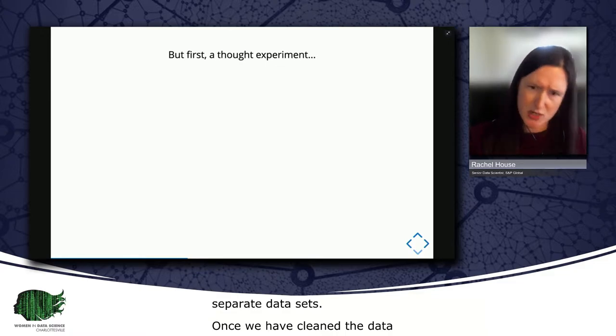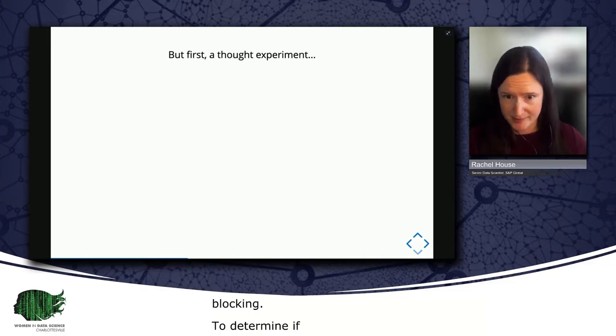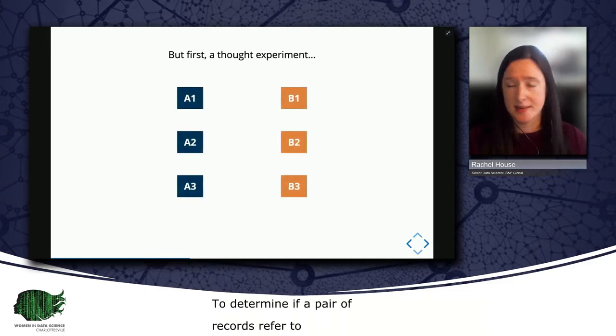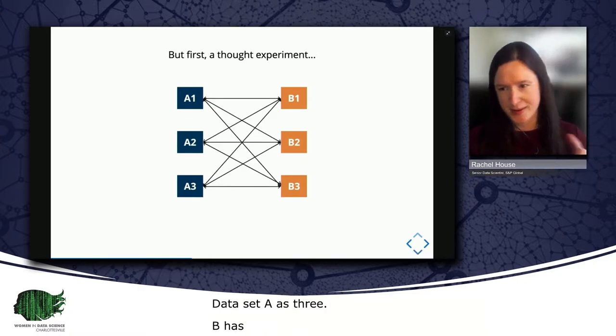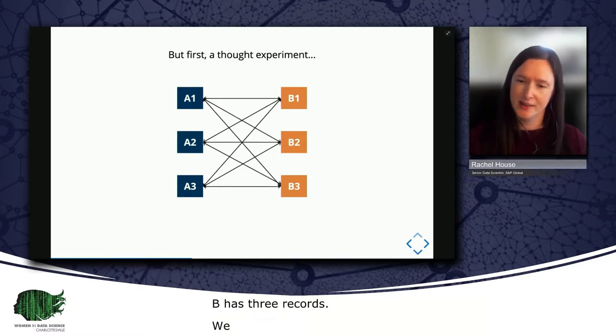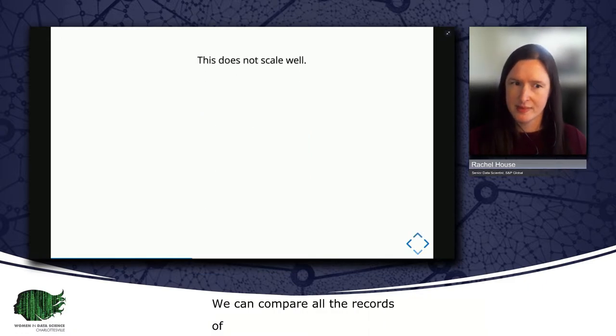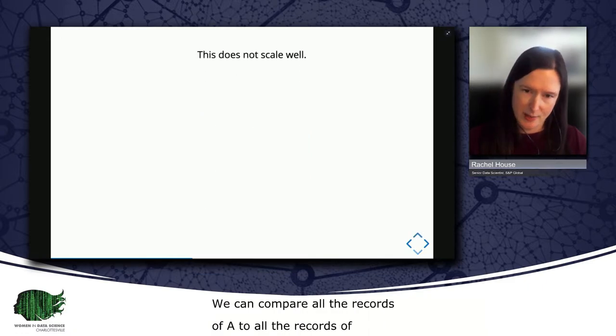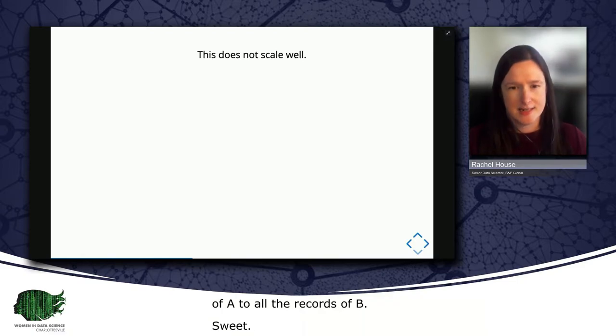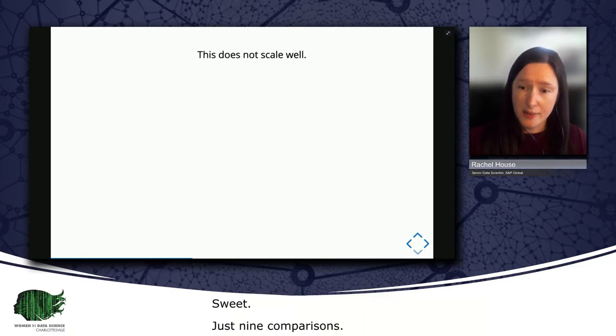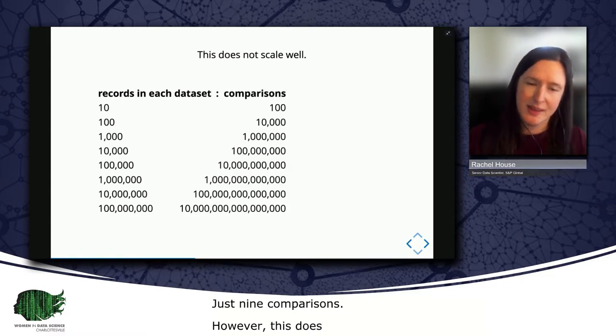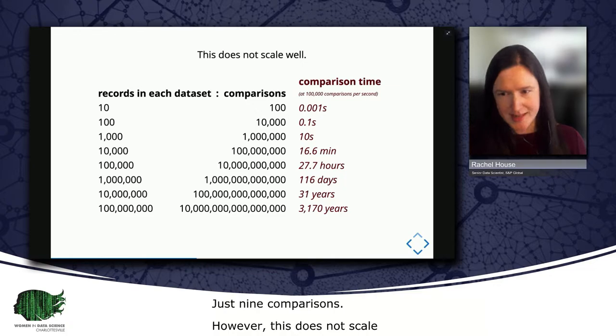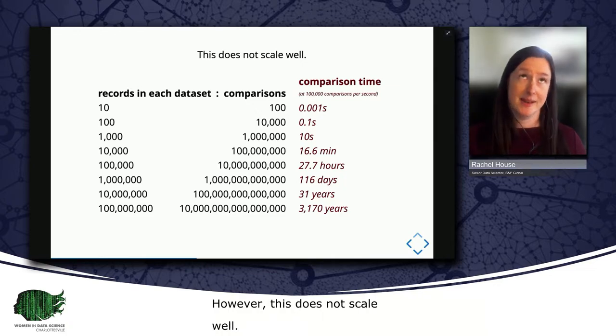Logically speaking, to determine if a pair of records refer to the same entity, we just need to compare them, right? So if dataset A has three records and dataset B has three records, we can just compare all the records of A to all the records of B and we've accomplished our linking. Sweet. Just nine comparisons. However, this does not scale well. Comparing each record of a dataset against each record of the other dataset is known as a Cartesian join. And in fact, it scales quadratically. So imagine needing to tell your boss that you'll have their linking results sometime in the next few millennia. Probably not going to go over well.